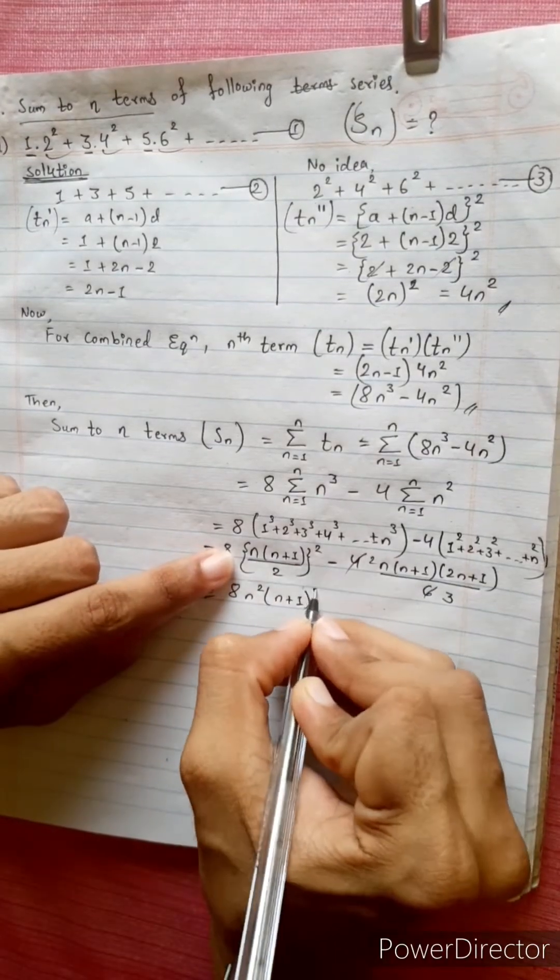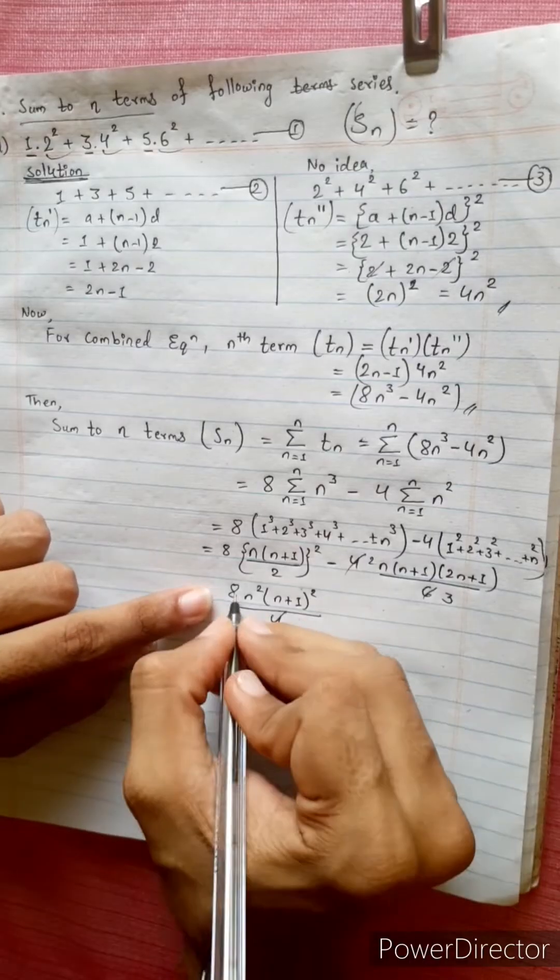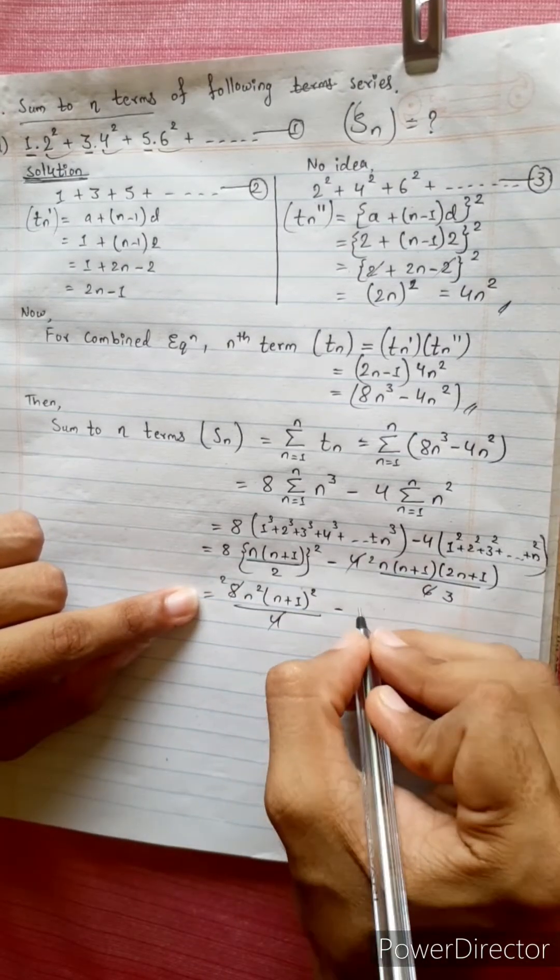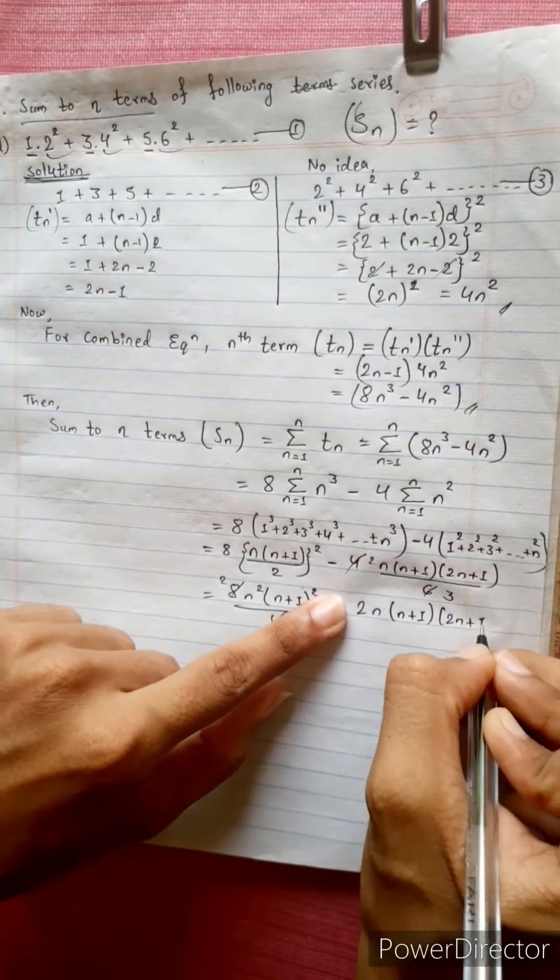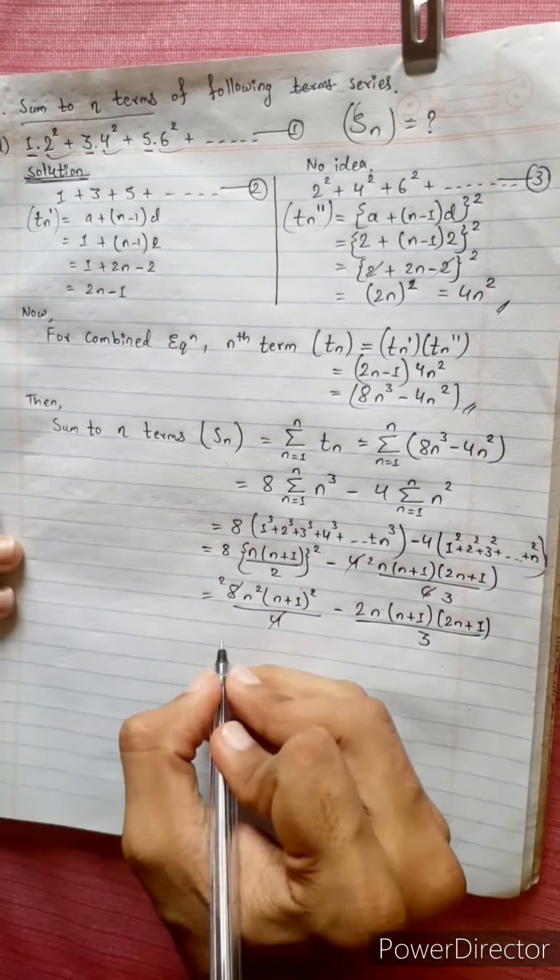...divided by 4, minus 2 times n times n plus 1 times 2n plus 1 divided by 3.